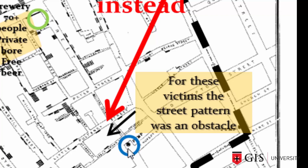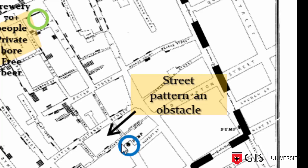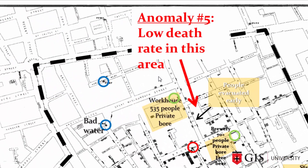In today's terms, if this analysis were automated in a GIS, this would be known as network analysis. Anomaly 5: there was a low death rate in one particular area. Without field work, he wouldn't have discovered that when the outbreak first occurred, that area had been pretty much evacuated — people just left. So there was really no one there to die of cholera.